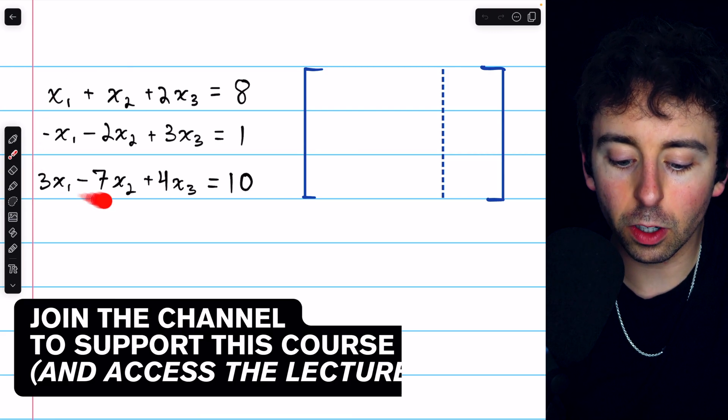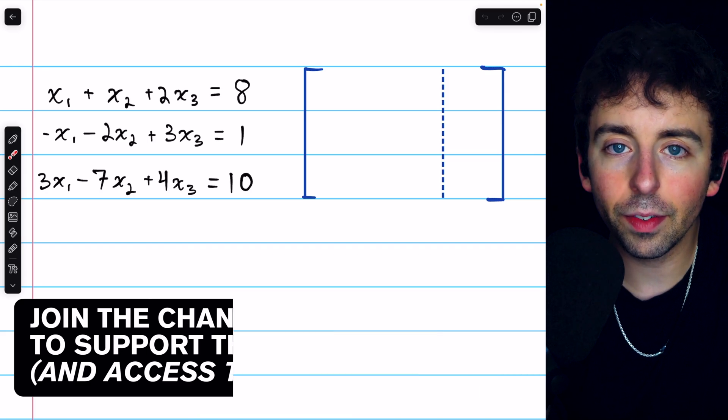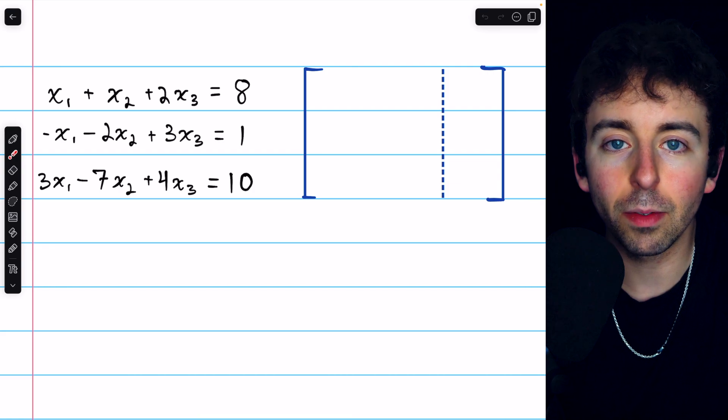Here is a system of linear equations in three unknowns. One way to solve such a system is by using elementary row operations on an augmented matrix.